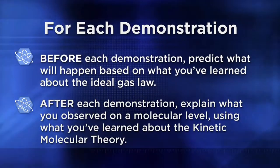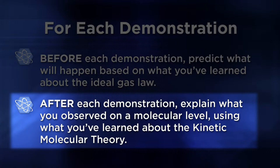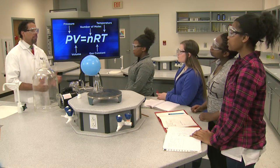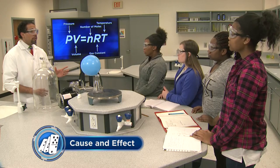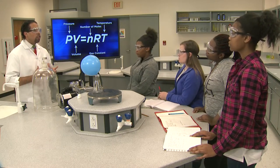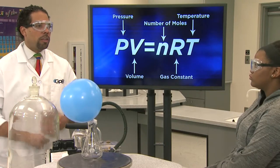I'm going to conduct a number of demonstrations with gases. For each demonstration, predict what will happen based on what you've learned about the ideal gas law, and then explain the observations at a molecular level using the kinetic molecular theory. Our first demonstration will explore the relationship between pressure and volume of a gas, with temperature and moles held constant. I have a vacuum pump, a bell jar, an inflated balloon, and a marshmallow. When I place the balloon into a container and remove some of the air using a vacuum pump, predict what will happen to the volume of the air inside the balloon.